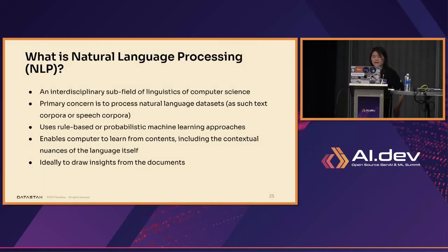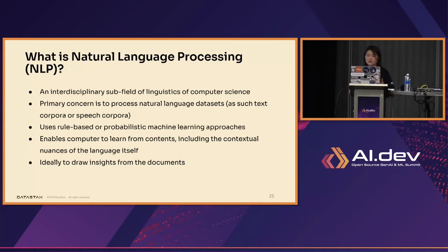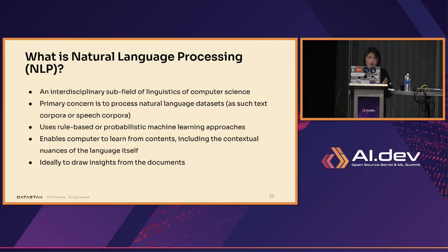NLP — Natural Language Processing — is an interdisciplinary subfield of linguistics and computer science. Now we need to process natural languages, and this is the discipline we use for that. It uses rule-based, probabilistic machine learning techniques to process data and enables computers to learn from content — not just producing simple outputs like A equals B, but creating context around what you're looking for, going beyond the obvious. The idea is it should also be able to generate context and draw insights from documents you're asking about.